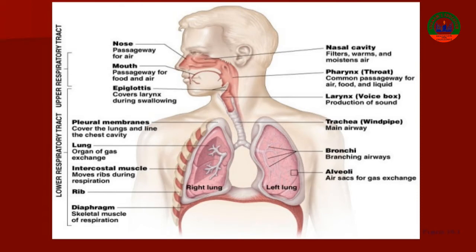First we'll talk about airway — what is the passage through which air or gases pass during respiration. Anatomically, airway may be defined as the passage through which the air passes during respiration. It may be divided into upper and lower airway.